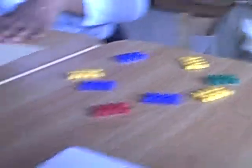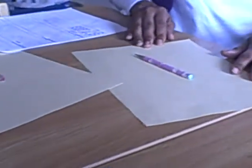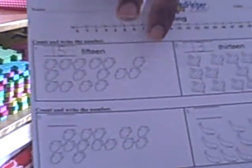The student will then write the numbers 7 and 8. The student can also complete this activity sheet, where they will count the number of objects in the set, and they will understand that the last counting word tells how many objects are within the set.